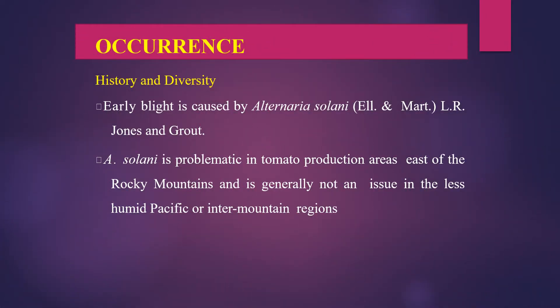Let us see the occurrence, history, and diversity of early blight. Early blight is caused by Alternaria solani, which is problematic in tomato production areas east of the Rocky Mountains and is generally not an issue in the less humid Pacific or inter-mountain regions. It is a common disease of tomato occurring on the foliage at any stage of growth.